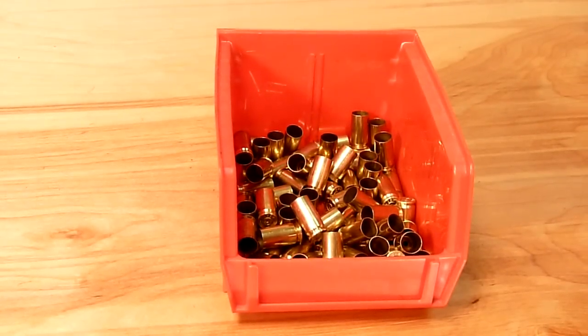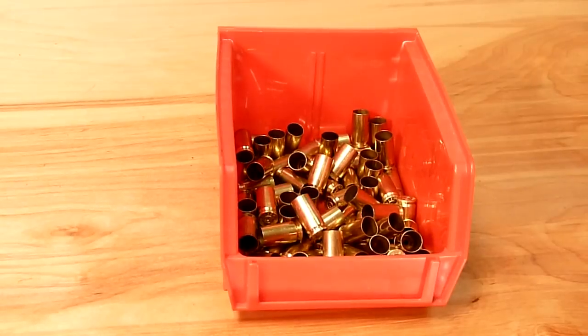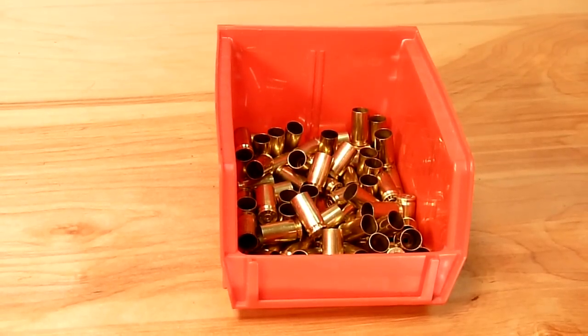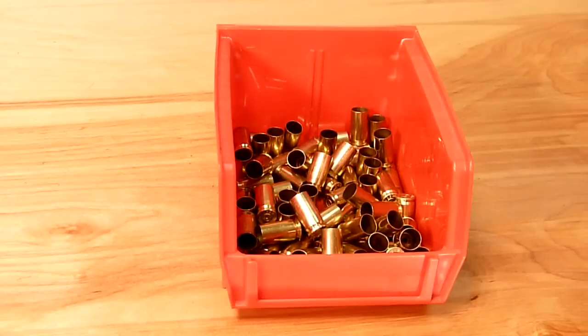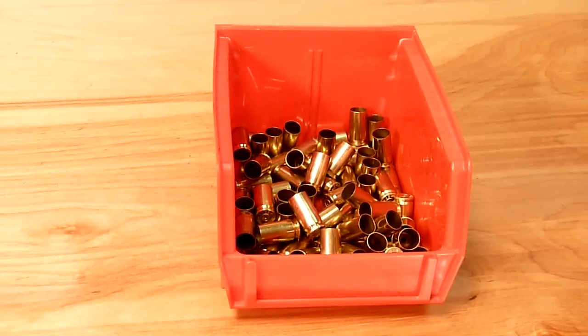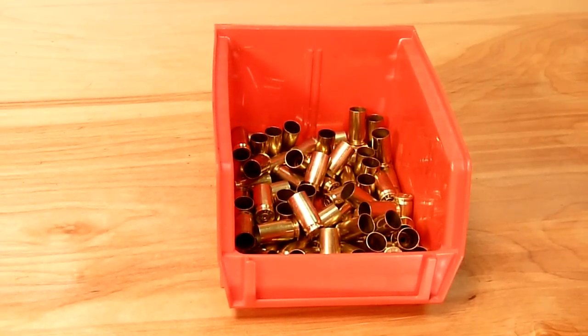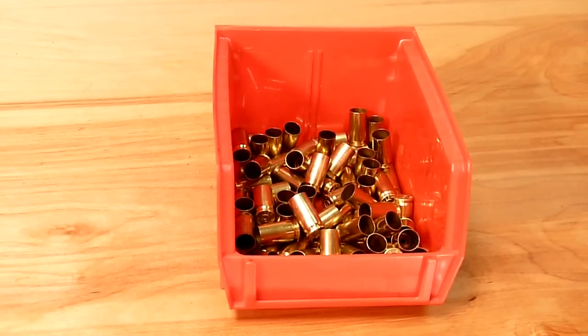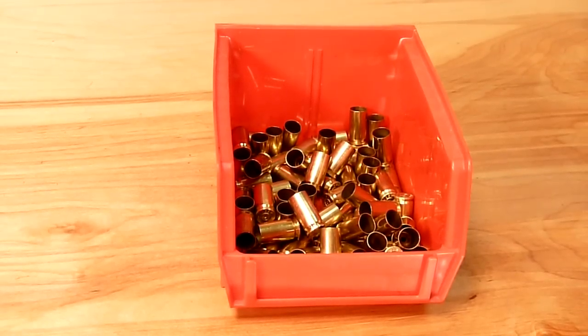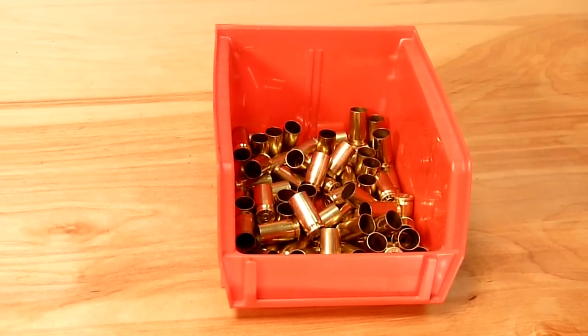The next thing we're going to do is fill the case feeder bowl with brass. This is brass that we've already cleaned in a tumbler with the appropriate media. We've also lubricated this with Hornady One-Shot. Even if you have carbide dies, the lubrication makes the loading process a lot smoother, so I highly recommend it.